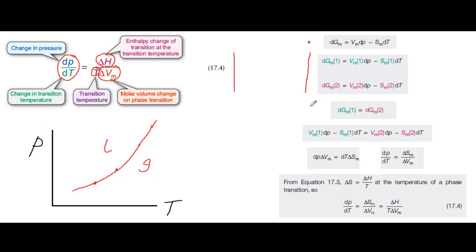But we're interested in the situation at equilibrium between the two phases, which is shown by the line between the phases in the phase diagram. And at equilibrium, dGm for phase one and dGm for phase two are equal. So we can put these two expressions equal to each other and get this longer expression here.